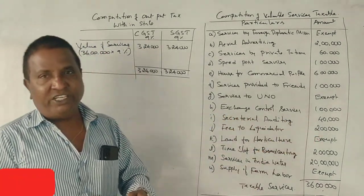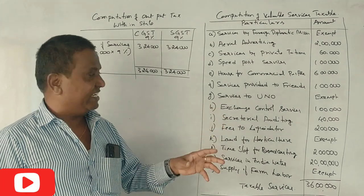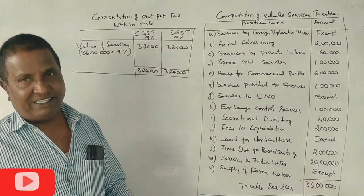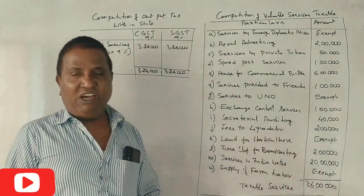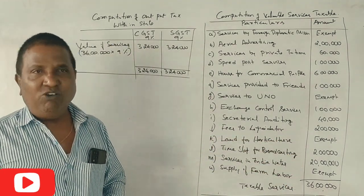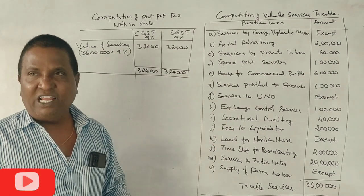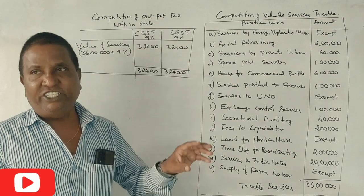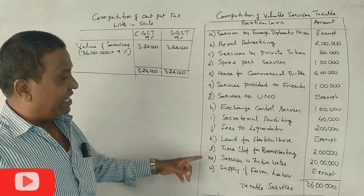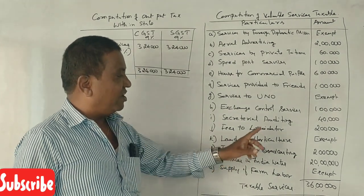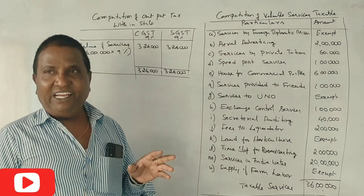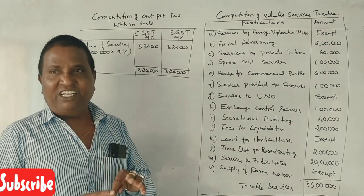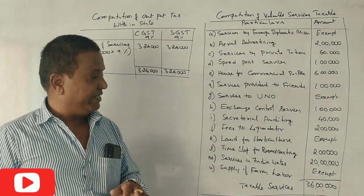Exchange control services and money exchange — with taxes. Secretarial auditing is a taxable service, and fee to a liquidator if a company is being closed is also taxable. Land given for horticulture, sericulture, and agriculture is exempted.